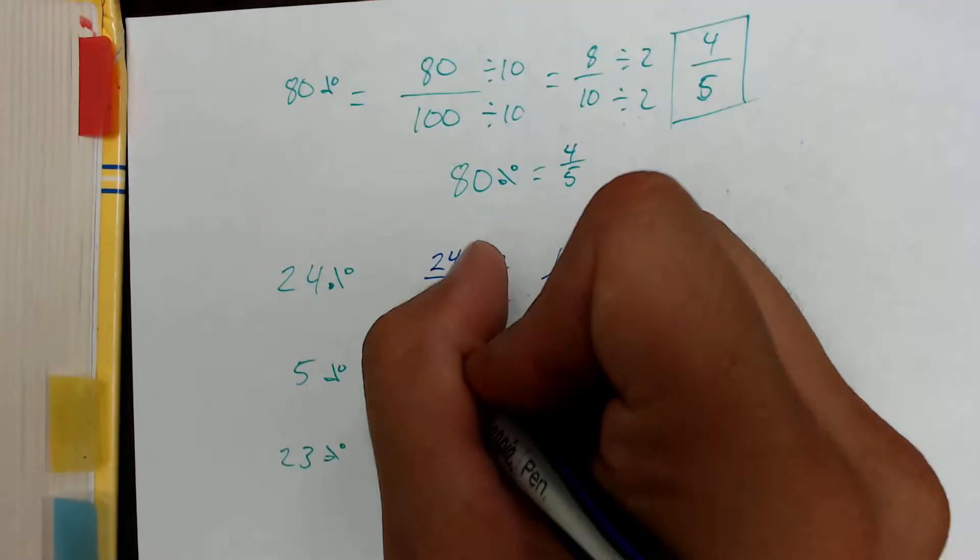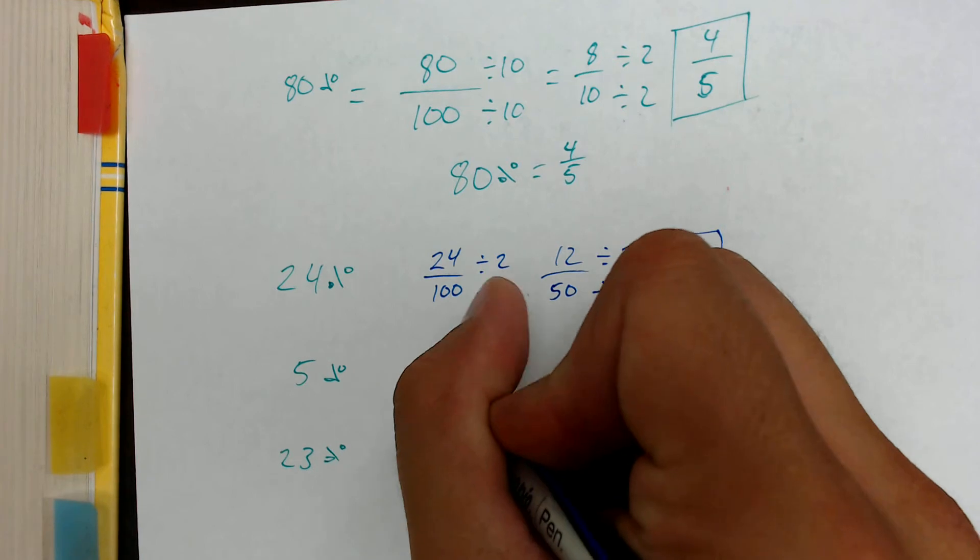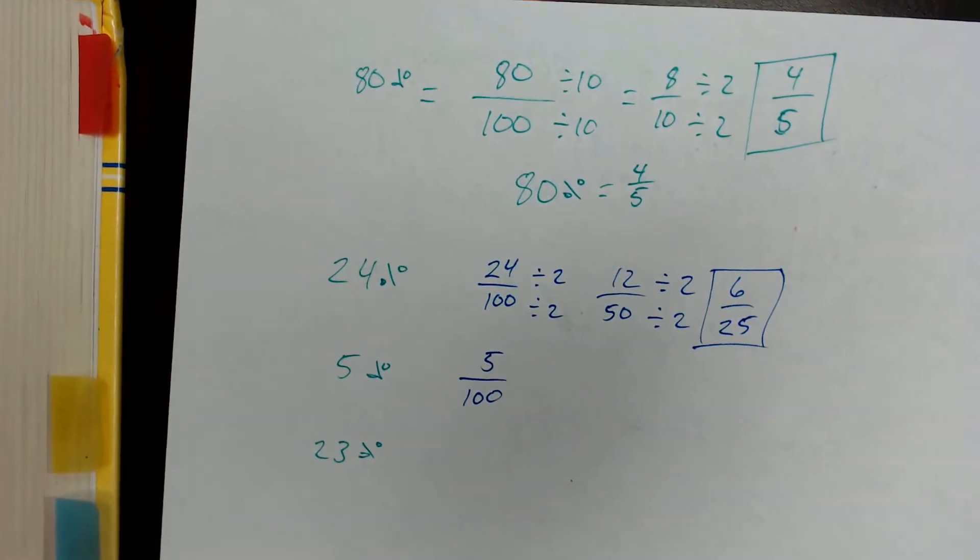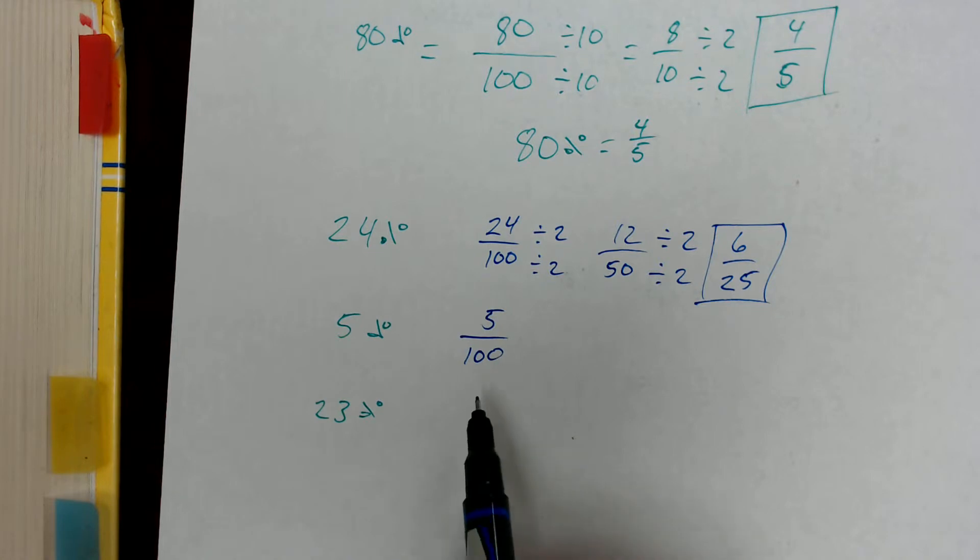Now let's go with 5%. Again, what if our percent is only a single digit? It doesn't matter. We're still going to put it over the number 100. Now, some of you may be thinking, okay, hey, that's it. But if you remember divisibility rules, if a number ends in 0 or 5, it is divisible by the number 5. So 100 can be evenly divided by 5.